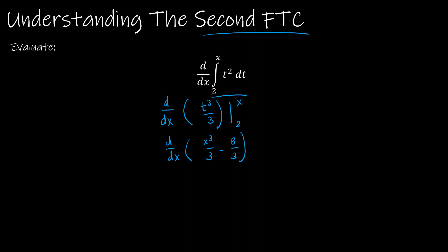Now what happens? Well, I'm going to take the derivative. So what's the derivative of X cubed over 3? 3X squared over 3, which is just X squared. And what's the derivative of 8 thirds? 0. So my final result after integrating and taking the derivative is X squared.